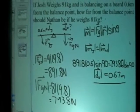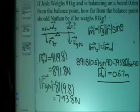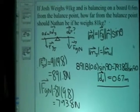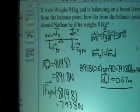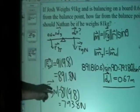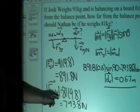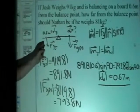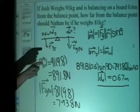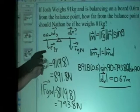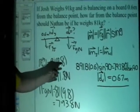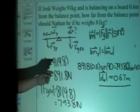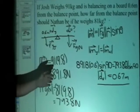If Josh weighs 91 kilograms and is balancing on a board 0.6 meters from the balance point, how far from the balance point should Nathan be if he weighs 81 kilograms? So the first thing you need to do to find torque is you have to find the force. And the only force affecting us when we're balancing is the force of gravity. So you multiply the mass by 9.8, which is the effect of gravity on Earth, and that gives you 891.8 newtons for me, and 793.8 newtons for Nathan. And then to find torque, you use the magnitude of the force times the magnitude of r, which is the distance from the balance point, which is where they're standing, times sine theta. And because this is a balance, that means that my torque must equal Nathan's torque. And because the perpendicular angle is 90 degrees, so that equals 1. So then you do 891.8 times 0.6 times sine of 90 equals 793.8 times the distance from the balance point for Nathan, and that equals 0.67 meters.